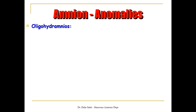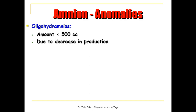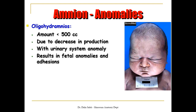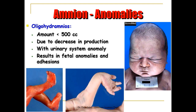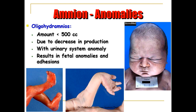The anomalies of the amniotic fluid: we have what is called oligohydramnios. In this case, the amount of amniotic fluid is less than half a liter, due to decrease in its production as in cases of urinary system anomaly like agenesis of the kidney. This results in fetal anomalies and adhesions. You can see puffiness of the eyes of the baby and compression of the nose, as if pressing against a glass, as well as abnormal development of the limbs — the ankles and wrists — because of the lack of room around the baby to develop, grow, and move.